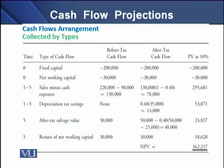Then we have depreciation tax savings, a non-cash item used to determine operating cash flows. This depreciation tax saving is added back to the operating cash flows. Then we have after-tax sale proceeds of the project assets at the end of the project's life, and the reversal or return of the investment in net working capital. So we can classify the cash flows of a project according to fixed capital, working capital, operating cash flows, and terminal cash flows — which include sale proceeds of assets and reversal of net working capital.